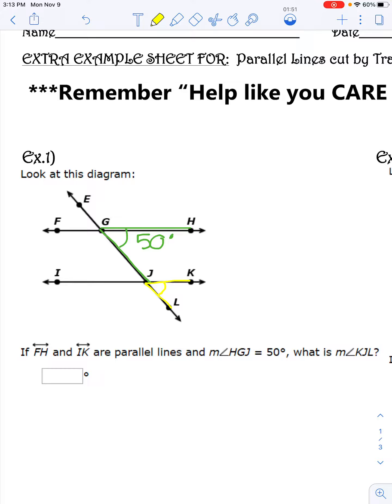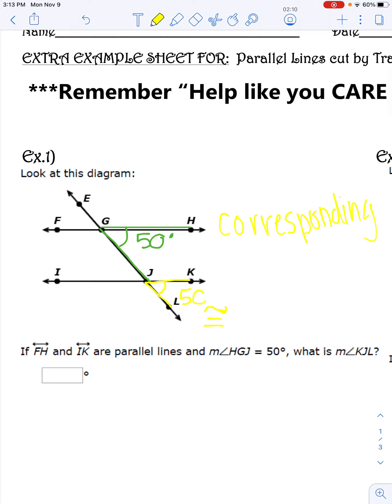Since they are in the same position but at different intersections, we call these corresponding angles. Corresponding angles have congruent angle measures, which means KJL has a measure of 50 degrees.